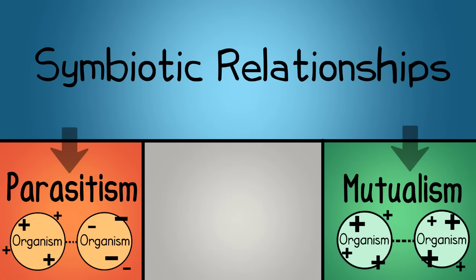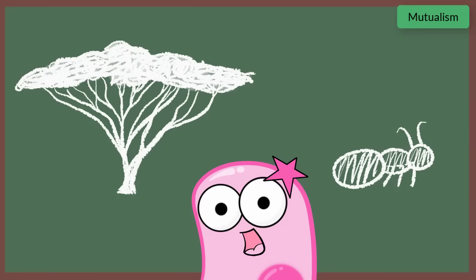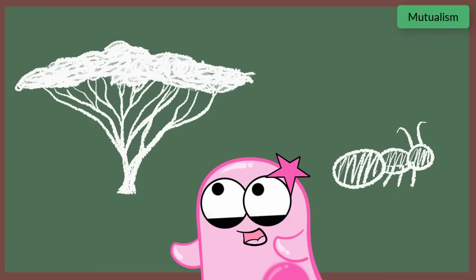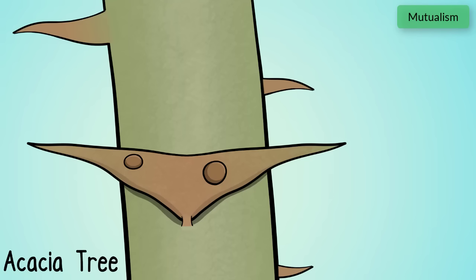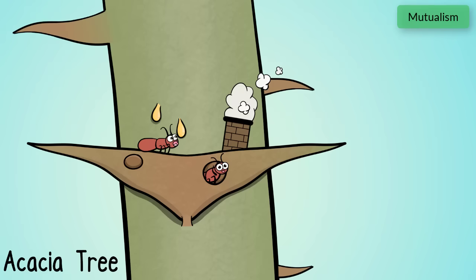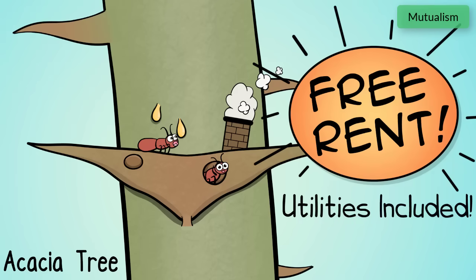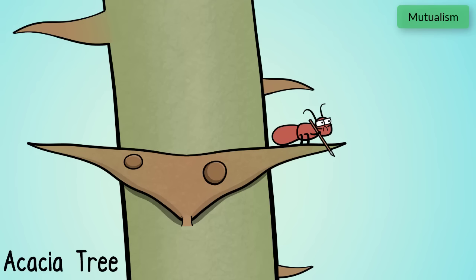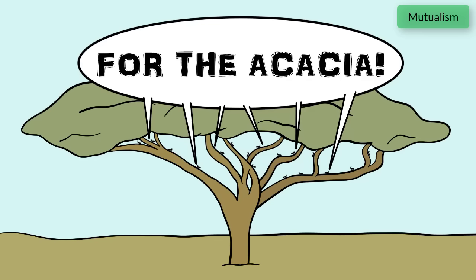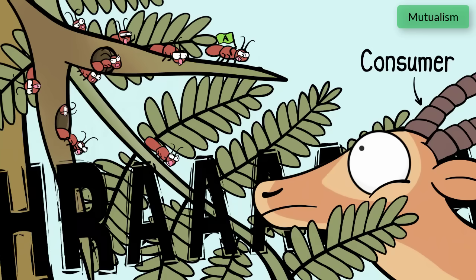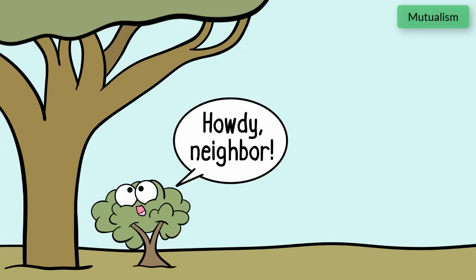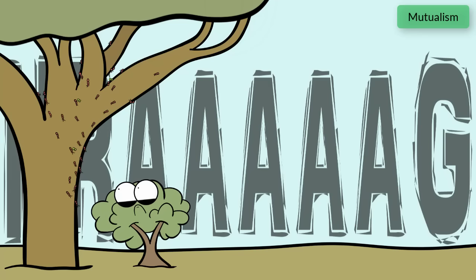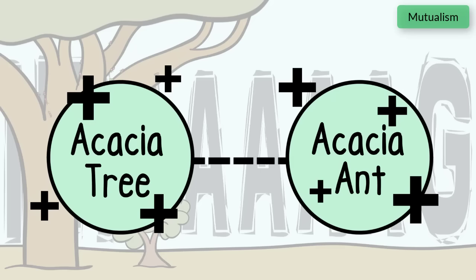Mutualism is an example of a symbiotic relationship where both organisms involved benefit. You really need to look up a video about acacia ants and acacia trees because this is a fascinating example. Some species of acacia trees form hollow thorns which provide housing to acacia ants, and some species even provide nectar as food for the ants. So what does the tree get in return? Protection. If a consumer tries to eat an acacia tree that has acacia ants, the ants come out of the thorns and attack the consumer. They'll even destroy plants that try to grow close to the acacia tree, eliminating the tree's competition. It's a nice mutual relationship.